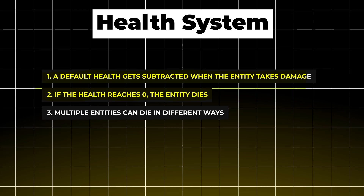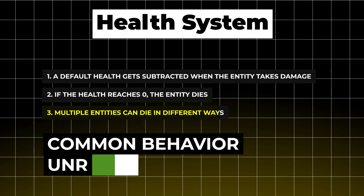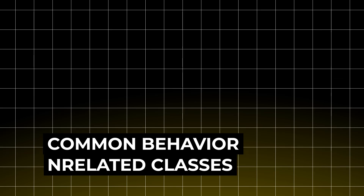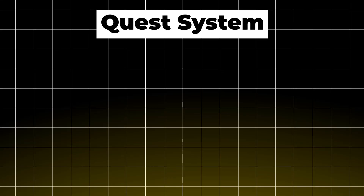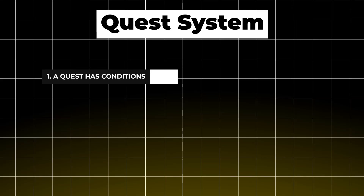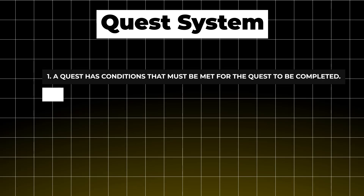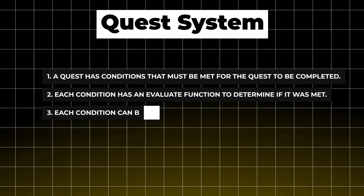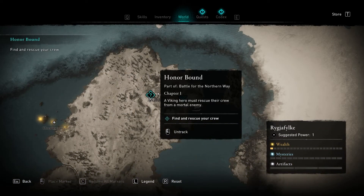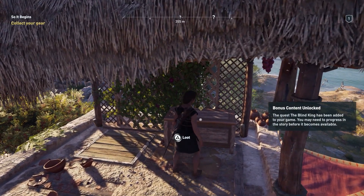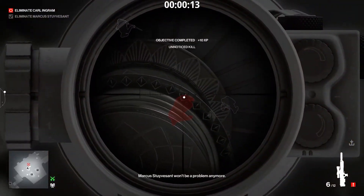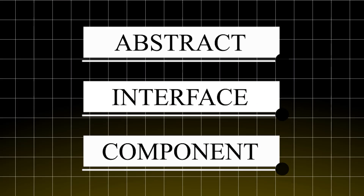Why did the component work best? Because we had common shared behavior between unrelated classes. Now what if we had common shared behavior between related classes? Let's say we're building a quest system where a quest has a list of conditions that must be met. Each condition has an evaluate function to determine whether it was met, and each condition can be evaluated differently — a location condition, a collectible condition, a kill condition, and so on.